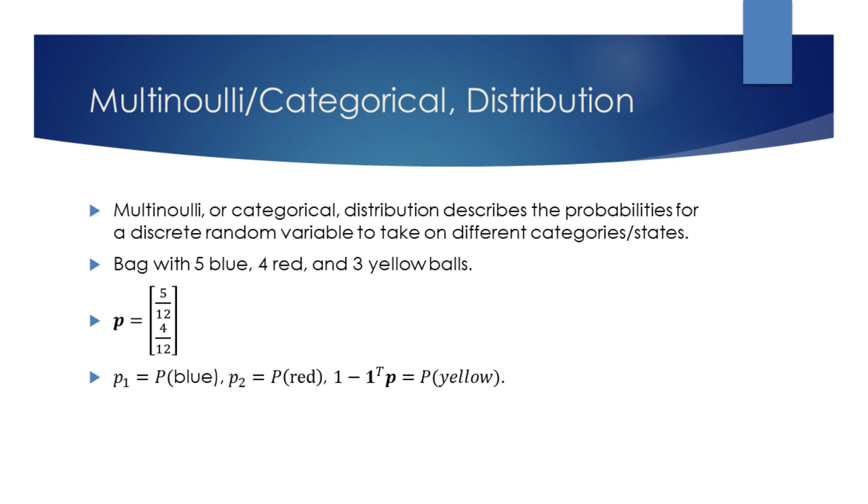Categorical distribution describes the probabilities for a discrete random variable to take on different categories or states. We will now consider an example of a case where we can use this distribution to describe the probabilities of different events.